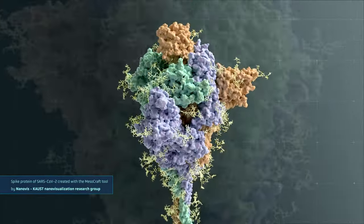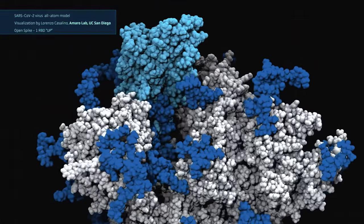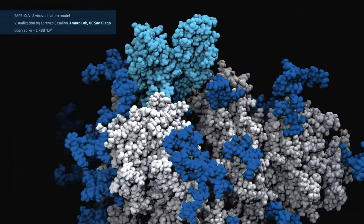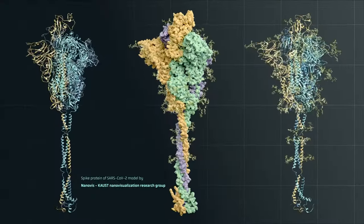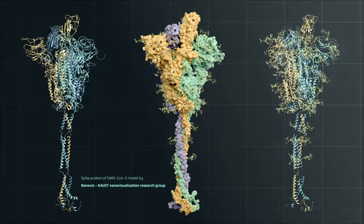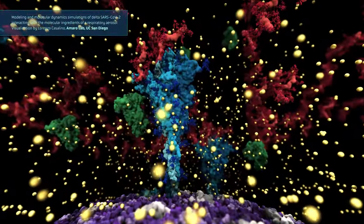This coronavirus uses spikes to latch on to human cells. Coating them with compounds called glycan chains to make them invisible to our immune system. Computer simulations have revealed chinks in this armor. Small regions free of glycans that are vulnerable to human antibodies.